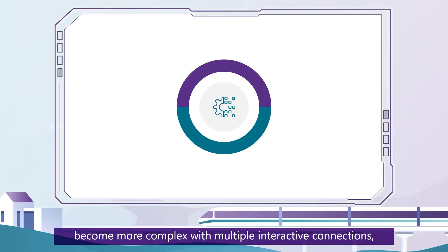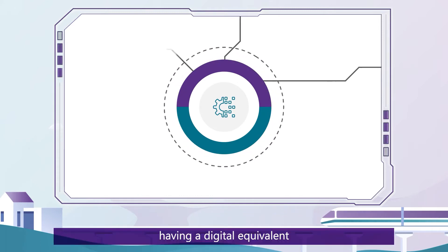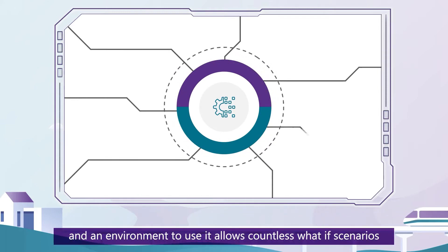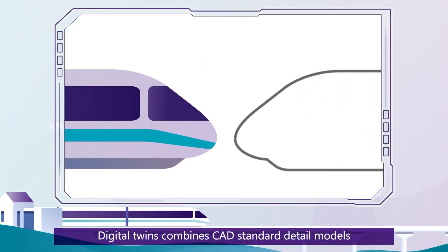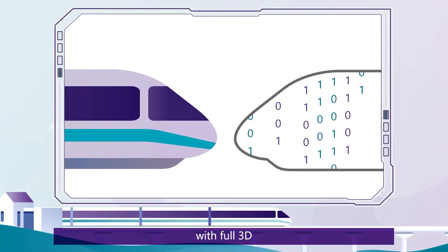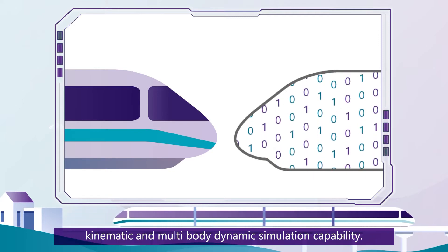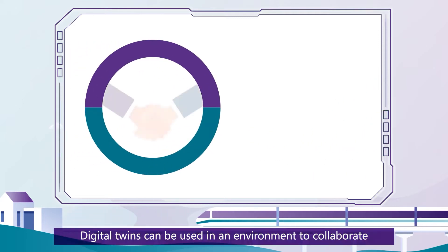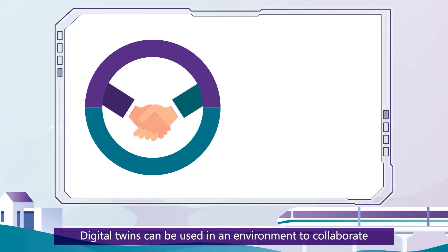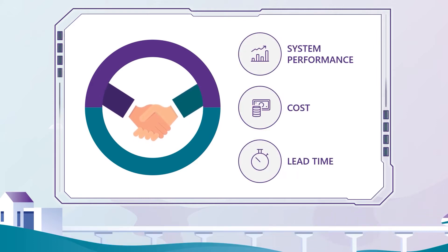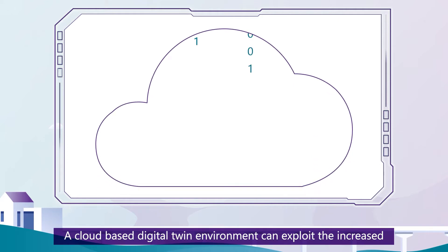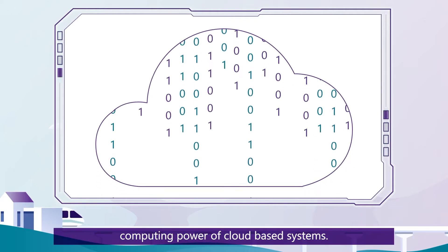As systems become more complex with multiple interactive connections, having a digital equivalent and an environment to use it allows countless what-if scenarios to be virtually tested and simulated across several disciplines. Digital twins combine CAD standard detail models with full 3D kinematic and multi-body dynamic simulation capability. They can be used to collaborate and optimize system performance, cost and lead times, exploiting the increased computing power of cloud-based systems.